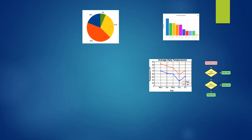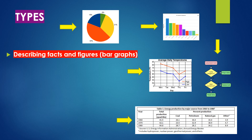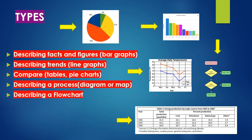Now let's take a look at the types of graphs. We can get anything related to pie chart, bar graph, tables, flow chart, and line graph. If you want to describe facts and figures, take help of bar graphs. Describe trends through line graphs, comparison through tables and pie charts, describe process diagram or map, and describe a flow chart.